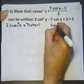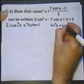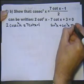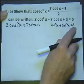What we need to do is remember this identity: that sine squared plus cosine squared equals 1.